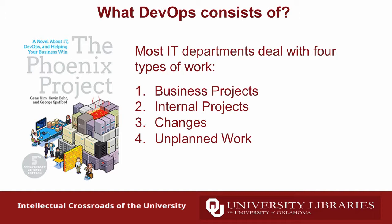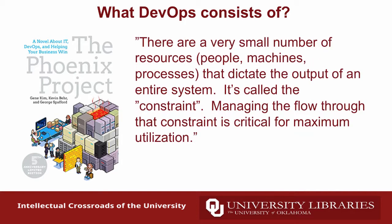Unplanned work is where you get slammed with things you don't know are coming - the provost's office calls, the president's office calls, the dean's office calls and says 'I need you to do this.' That's a big hit on your workflows. The reality is we have a small number of resources - people, machines, and processes - that dictate the output of our IT flows and development workflows, and managing that constraint is really important.